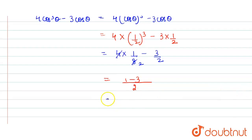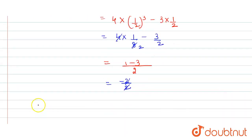So -2/2 is -1. So the value of 4cos³θ - 3cos θ is equal to -1. And this is our required answer. Thank you.